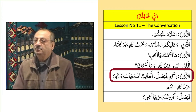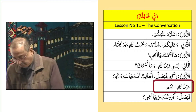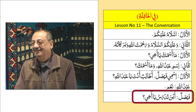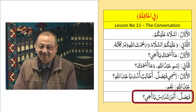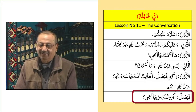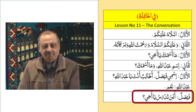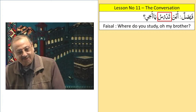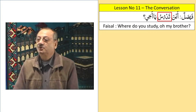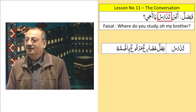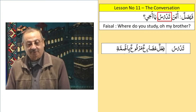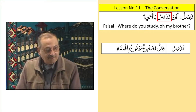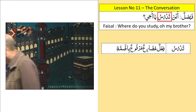'Atalibun anta ya Abdullah? Naam.' Now the question comes: 'Ayna tadrusu ya akhi?' — 'Where do you study, oh brother?' Tadrusu is analyzed as: Fi'lun Mudariun Marfuun bi Dhamma. And where is the Fa'il? Damirun Mustatirun, takdiruhu Anta.